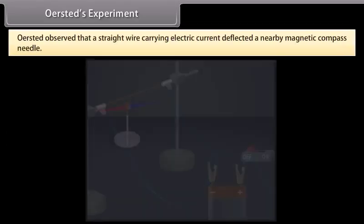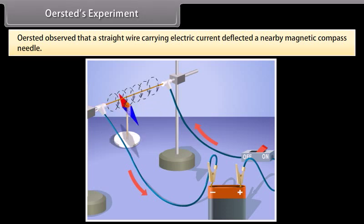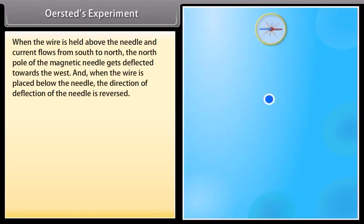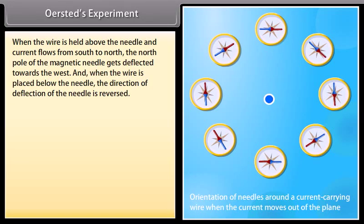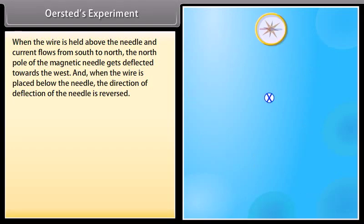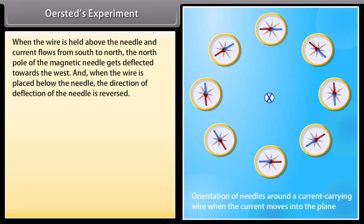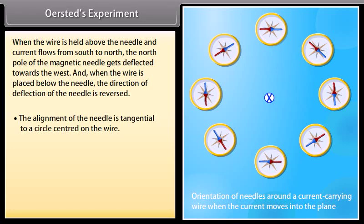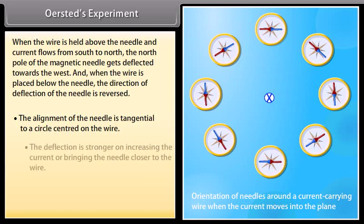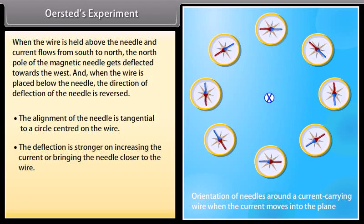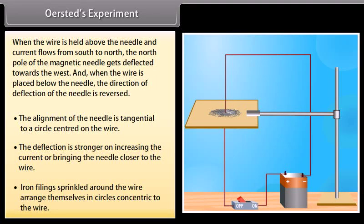Oersted's Experiment: Oersted observed that a straight wire carrying electric current deflected a nearby magnetic compass needle. When the wire is held above the needle and the current flows from south to north, the north pole of the magnetic needle gets deflected towards the west. When the wire is placed below the needle, the direction of deflection is reversed. The alignment of the needle is tangential to a circle centered on the wire. The deflection is stronger on increasing the current or bringing the needle closer to the wire. Iron filings sprinkled around the wire arrange themselves in circles concentric to the wire.